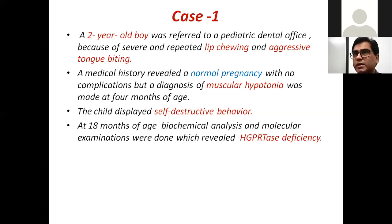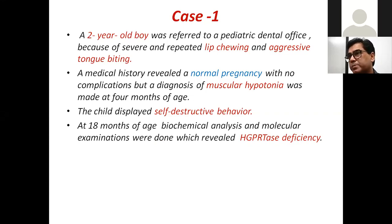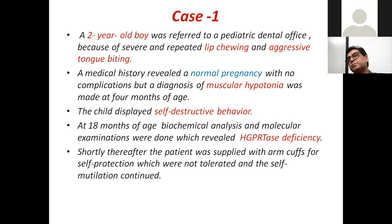At 18 months his pediatrician ordered biochemical and genetic testing for certain enzymes suspected to be functioning abnormally or congenitally deficient. On this enzymatic analysis, he was found to have a deficiency of one very important enzyme known as HGPRT. Shortly thereafter, the patient was supplied with arm cuffs for self-protection.